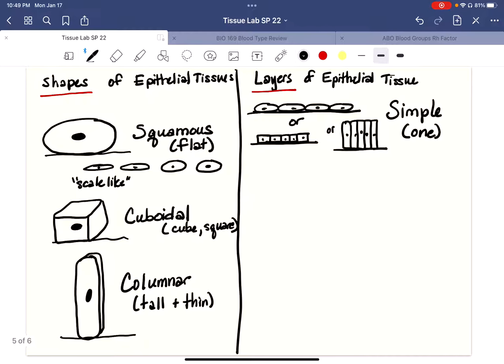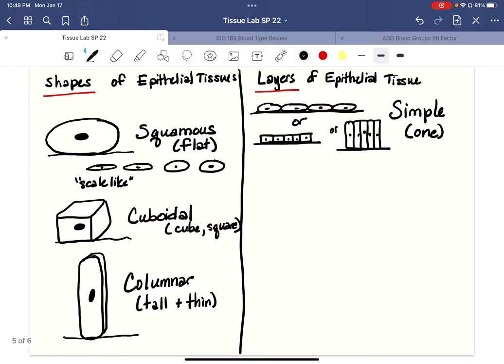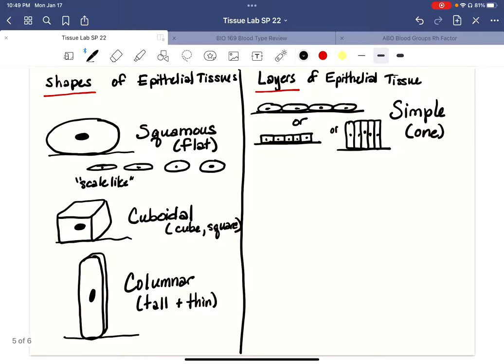The next type of layer we could have would be called stratified. So when it's stratified, just like the word strata, that means many layers. And so here I'm just drawing an example of many layers of squamous on a basement membrane.